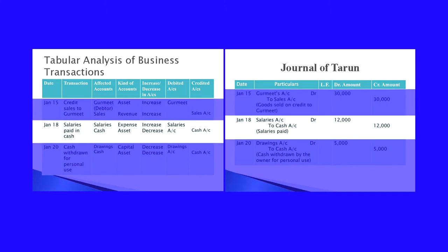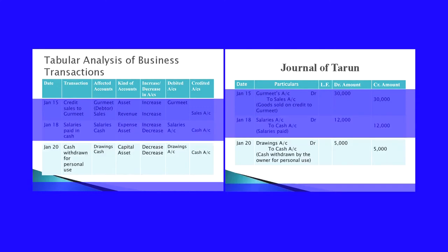Moving to the next transaction, January 18th: salaries paid in cash. The two affected accounts are salaries and cash. Salaries come under expense and cash comes under asset. Salaries increase, that is expense increases, and cash is going outside the business when you pay salary, so cash decreases. When expense increases, that expense account is debited — salary account will be debited. When asset decreases, we have to credit that account, so cash account is credited. Salaries account will be debited and cash account will be credited.